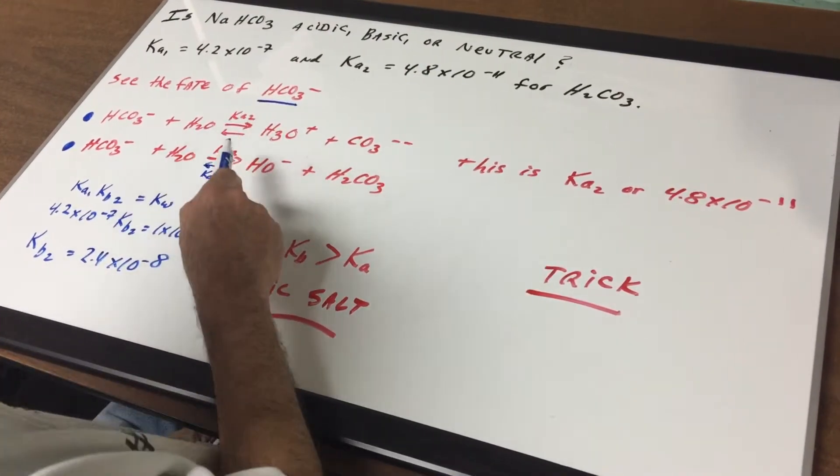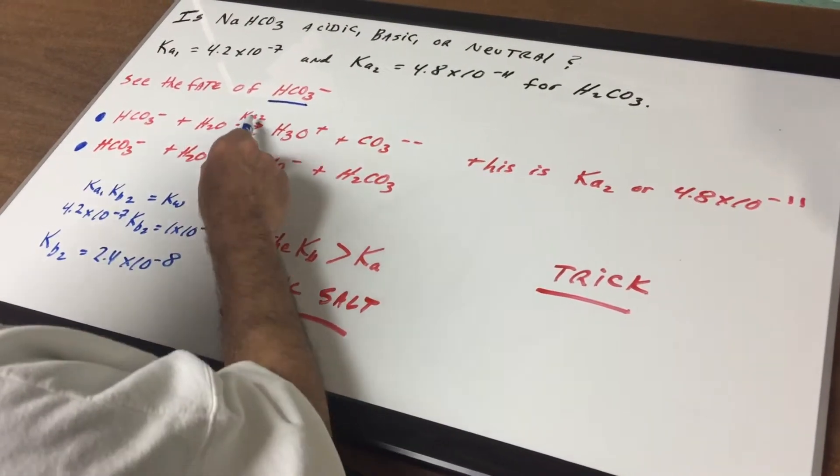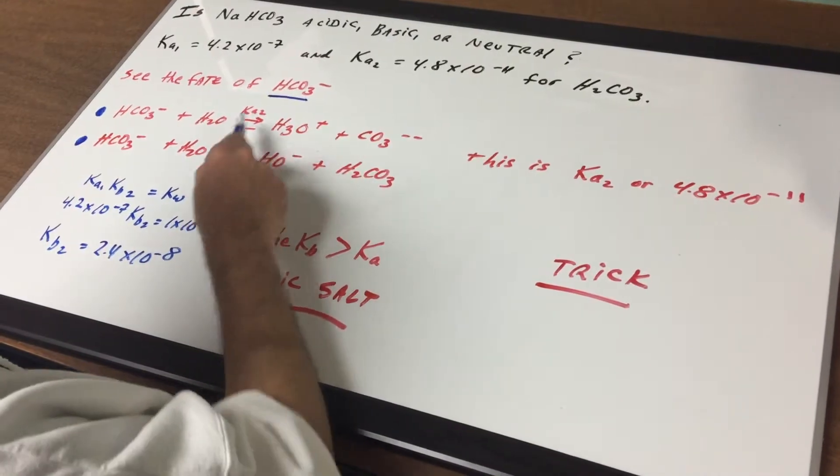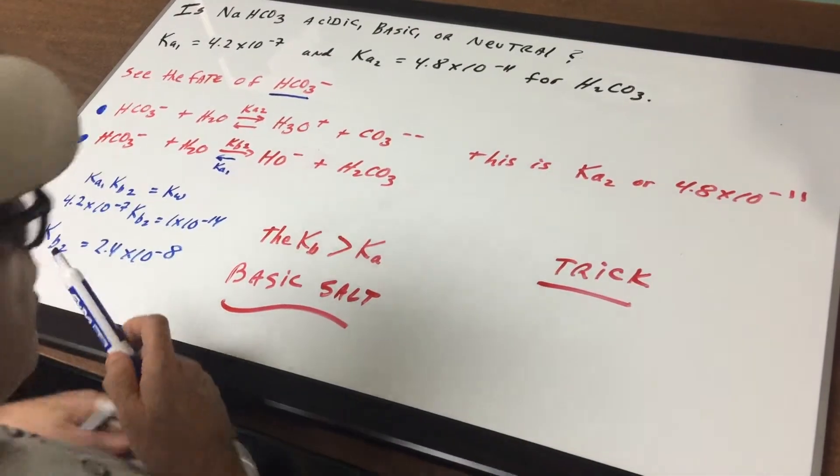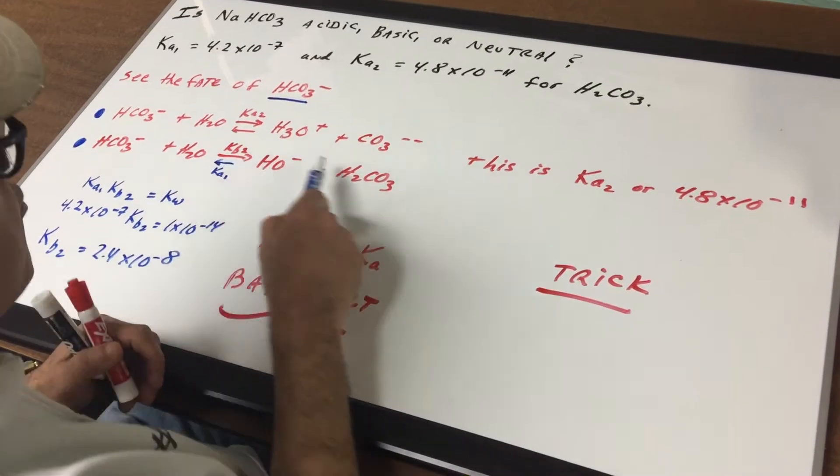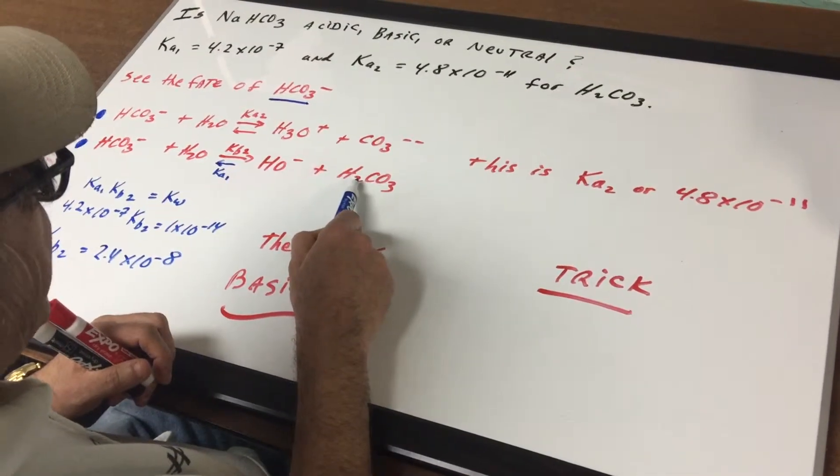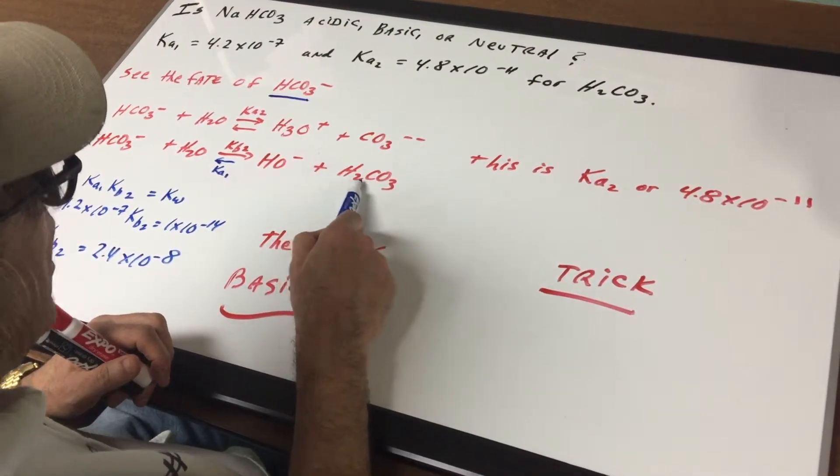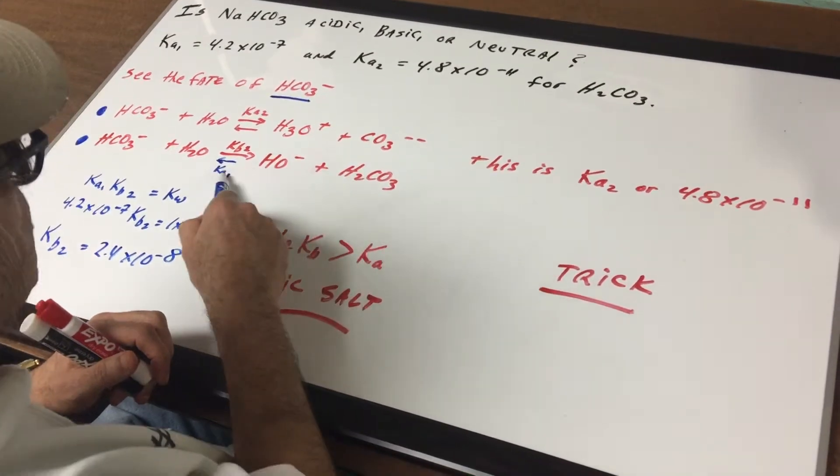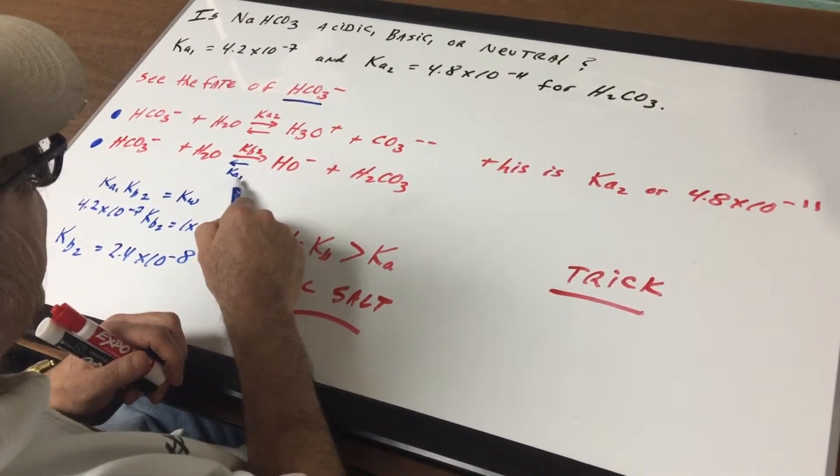What we need to do is we need to compare how does Ka2 compare to KB2. Well the reverse of this reaction, I hope you can see, would represent the loss of the first proton. So that would represent Ka1.